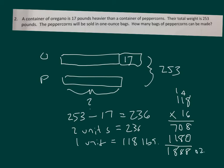So that's how many bags we can make, because it says they'll be sold in one ounce bags. 1,888 bags of peppercorns can be made.